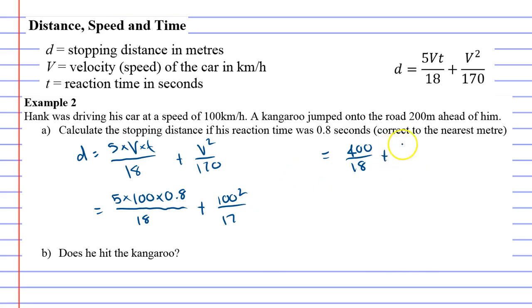plus 100 squared which would be 10,000 over 17. And I think it would work a lot easier if we just work this all out in one piece. 400 divide 18 plus 10,000 divide 17 gives me